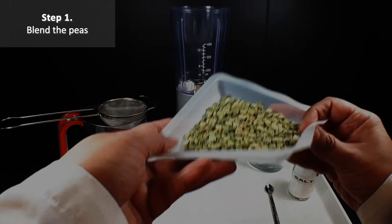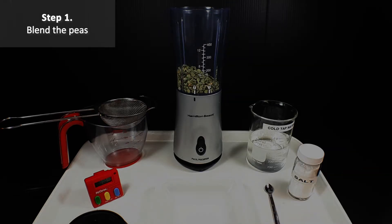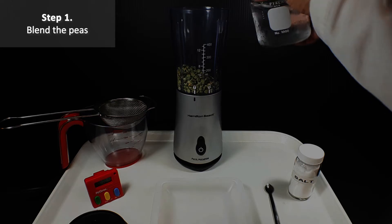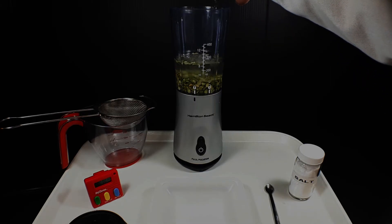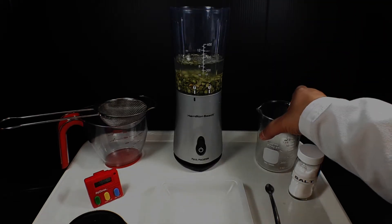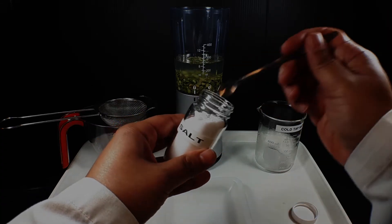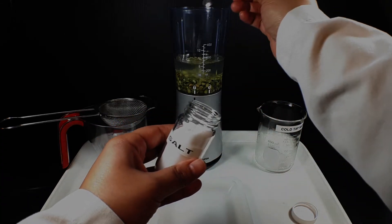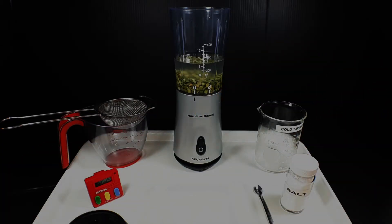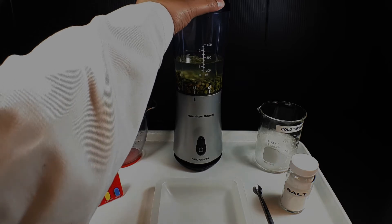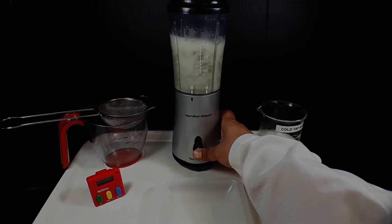The first step is to break down the cell walls of the split peas. This is accomplished by blending 100 grams of dried split peas with 200 milliliters of cold tap water. At this point we also add 0.6 milliliters of table salt. The sodium ions in the solution will help when we precipitate the DNA later in the protocol. Once everything is added and the lid is secure, blend for exactly 15 seconds.